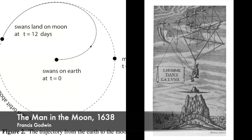Thus, the trajectory from the earth to the moon is not a straight line but it is a pursuit curve. In the story, Godwin says that the flight to the moon takes 12 days whereas the return trip which follows a straight line takes 8 days.